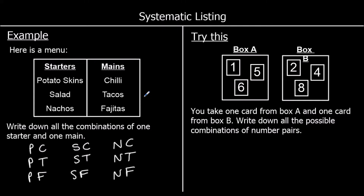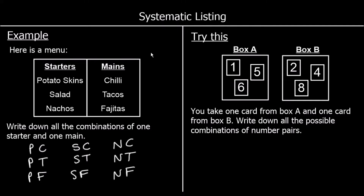One for you to try. There are numbers in box A and box B. You take one card from box A and one from box B — write down all the possible pairs of numbers that you could get.